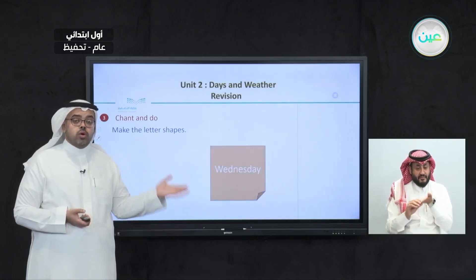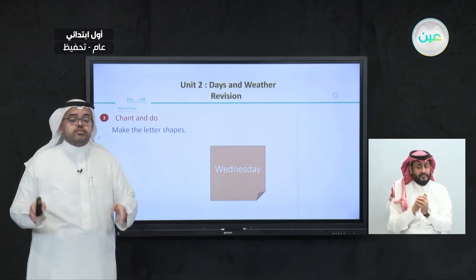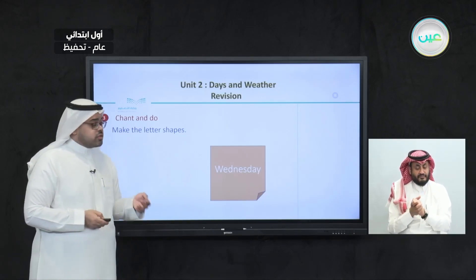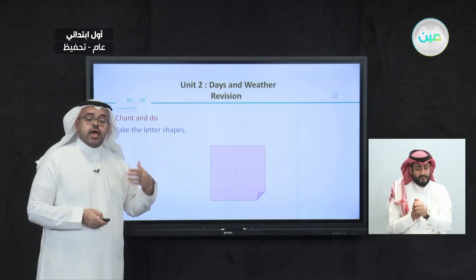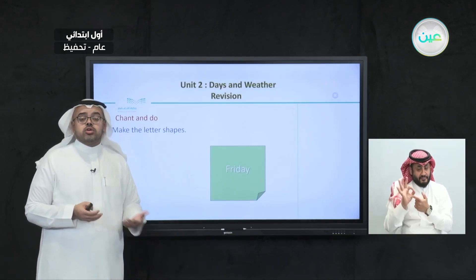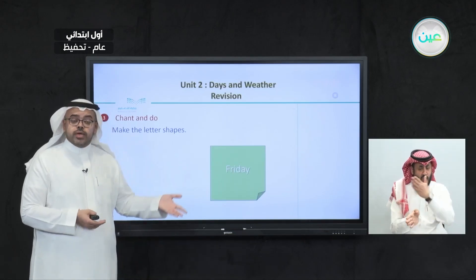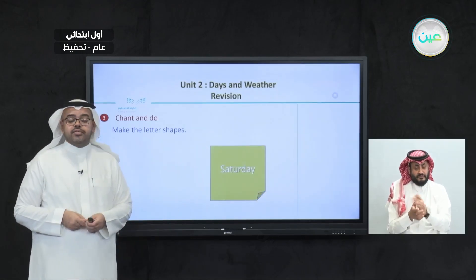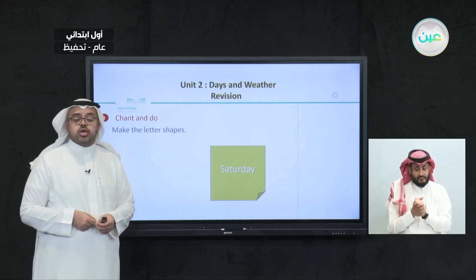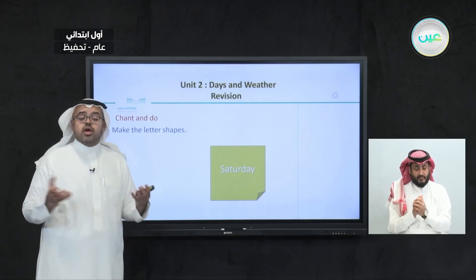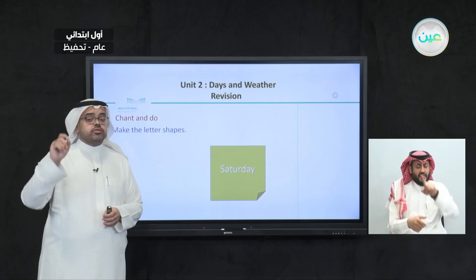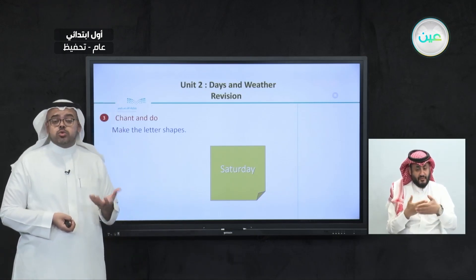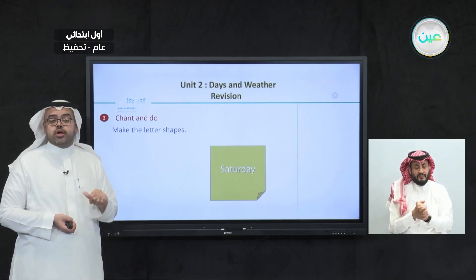After Tuesday, we have Wednesday, and we made the shape of the first letter W with our arms or one hand. Then we had Thursday, followed by Friday, where we used our body and two arms to make the shape of letter F, or drew it with one hand. Finally, we made the shape of letter S for Saturday. These actions help us not only memorize the letters but also memorize the days and never forget them.